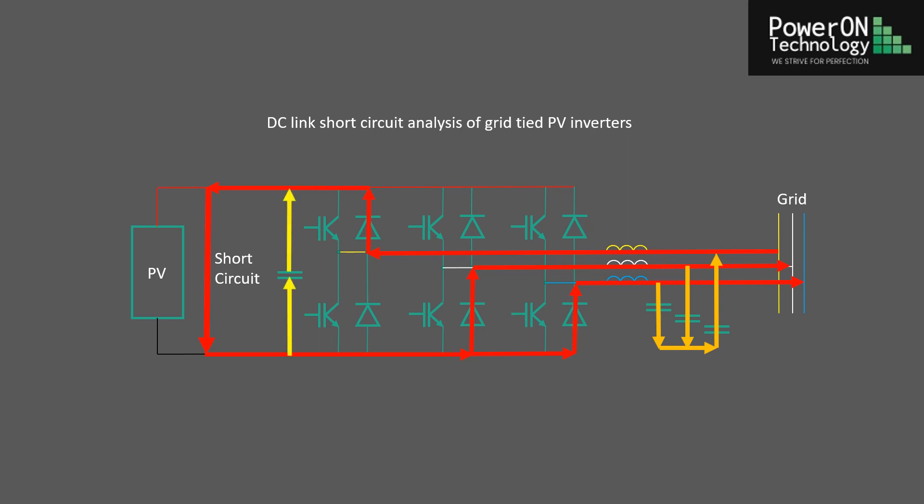The second part of the fault current is the discharge from the DC link capacitor directly into the short circuit. This capacitor bank is usually quite large, so the peak current is likely to be quite high, but it does not last long. However, the damage due to this discharge current can be quite severe.